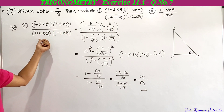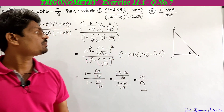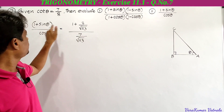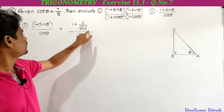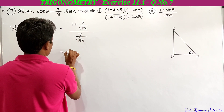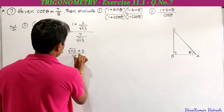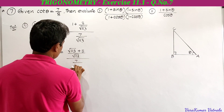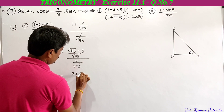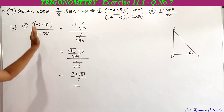For the second bit, (1 + sin theta) by cos theta. We have sin theta equal to 8 by root 113 and cos theta equal to 7 by root 113. Substituting: (1 + 8 by root 113) divided by (7 by root 113). Taking LCM in the numerator gives (root 113 plus 8) by root 113, divided by 7 by root 113. The root 113 terms cancel, and we get (root 113 plus 8) divided by 7.